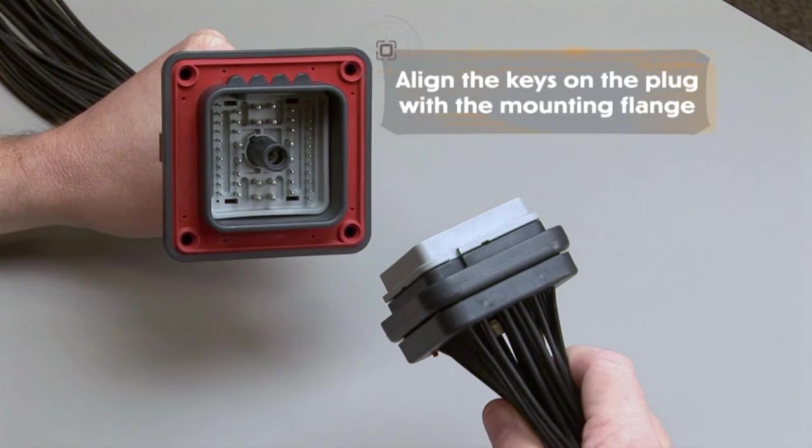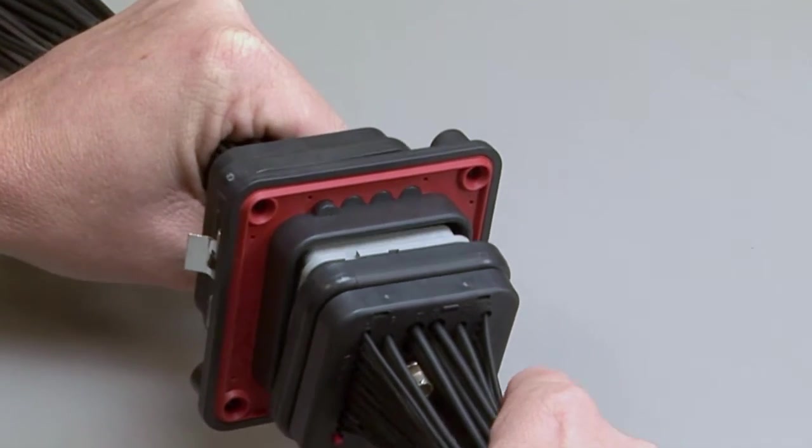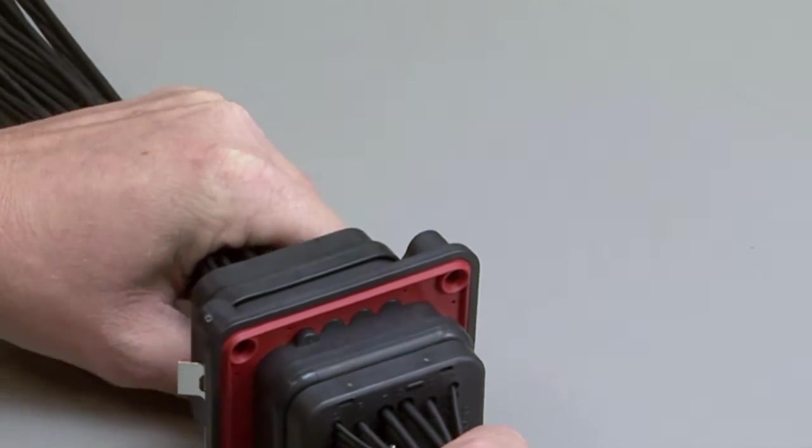Align the keys on the plug with the mounting flange. Push the two parts together and tighten the jack screw to the recommended torque rating.